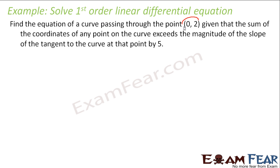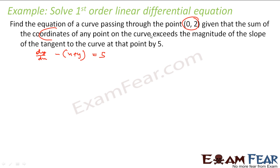Again, to find the equation of the curve passing through the point (0, 2): the question says the sum of the coordinates at any point of the curve exceeds the magnitude of the slope of the tangent at that point by 5. So x plus y exceeds dy/dx by 5, meaning x plus y minus dy/dx equals 5.